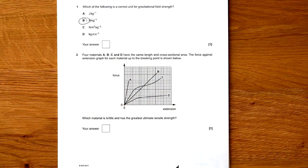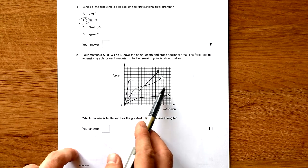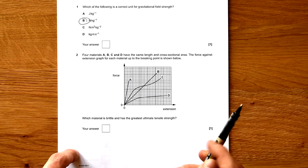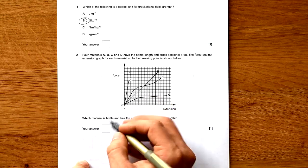Four materials A, B, C and D have the same length and cross-sectional area. Which material is brittle and has the greatest ultimate tensile strength? C and D aren't brittle because they are ductile, they start stretching a lot. A and B are brittle but we can see that B ends up higher. It can take a greater force than A.